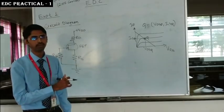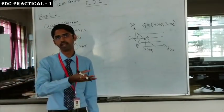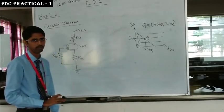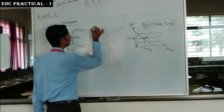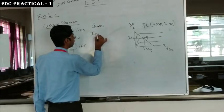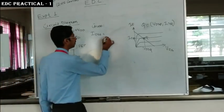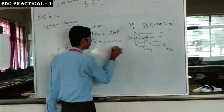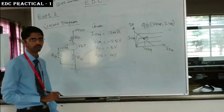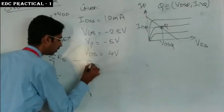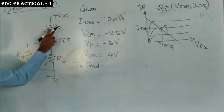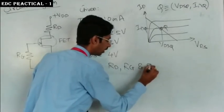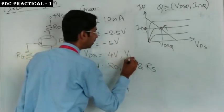Design means we are given external parameters — VGS, VDS, pinch-off voltage, and IDSS — and we find the values of the resistances. The given values are: IDSS = 10 mA, VGS = −2.5 V, VP = −5 V, VDS = 4 V, and VDD = 12 V. We need to find RD, RG, and RS.